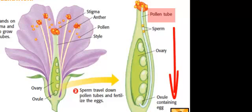Once the sperm gets into the ovary, it's going to go into the ovules and fertilize the ovules. Once the ovules are fertilized, the ovary will eventually become a fruit and then the ovules will turn into seeds.